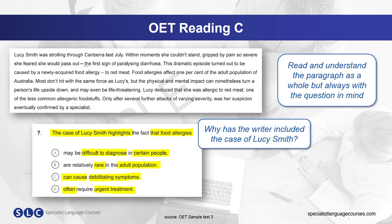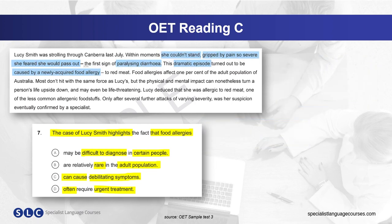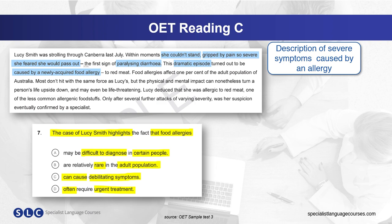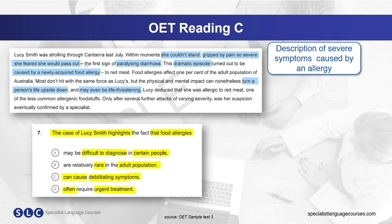Now read and understand the paragraph, always with the question in mind: why has Lucy Smith's case been included by the writer? When we read the text we can see the description of what happened to Lucy and the severe symptoms she experienced. This is reinforced by the idea that allergies can cause serious symptoms and impact greatly on a person's life. We can infer that the writer wants us to understand this severity by including Lucy's case, and so the correct answer is C — they can cause debilitating symptoms.